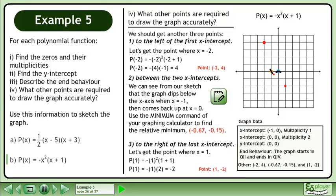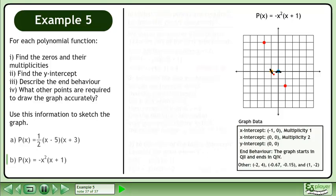Now let's get the point where x equals 1. If we evaluate the function for 1, we get a result of negative 2. Draw a point at (1, negative 2). We now have enough information to draw the graph.